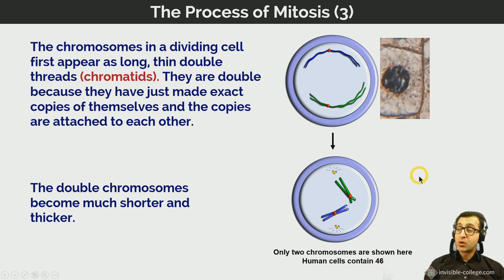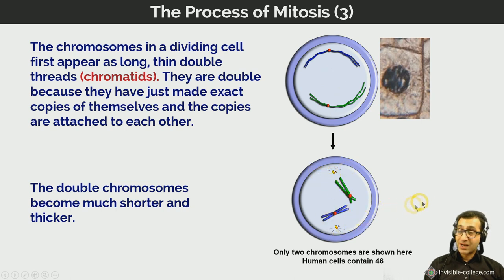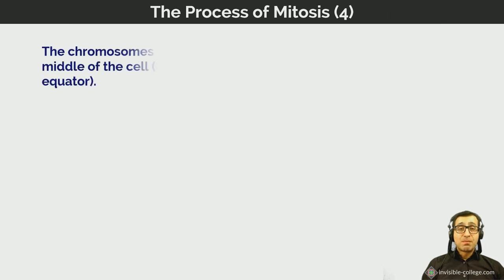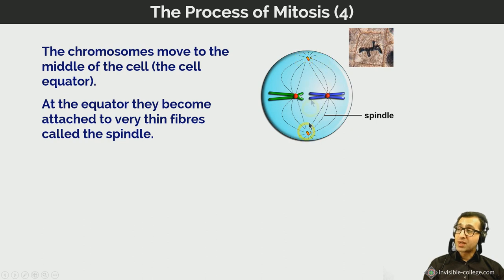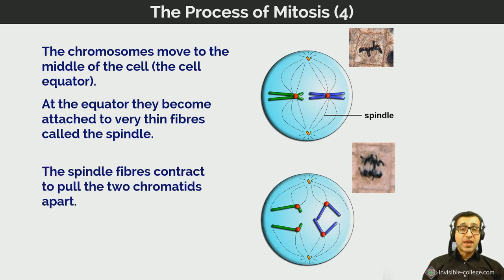The double chromosomes then become shorter, thicker, and more visible. In a somatic human cell there are 46 chromosomes — 23 homologous pairs. The chromosomes move to the middle of the cell — the cell equator — and become attached to spindle fibers which emanate from centrioles at either end. The spindle fibers contract to pull the two chromatids apart, splitting the centromere, and then move the sister chromatids to opposite ends of the spindle.